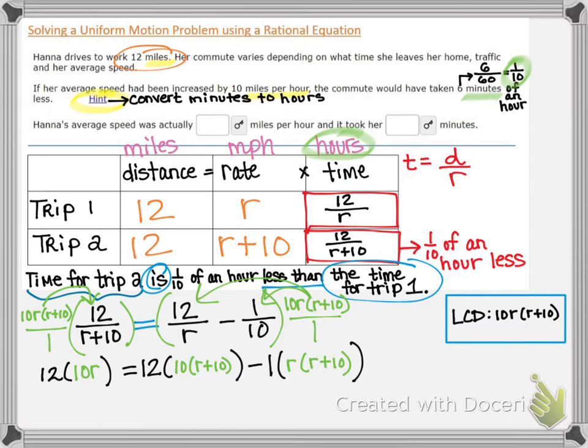Now we need to clean everything up. Here comes the fun part. We get to distribute a little bit more. So on the left, we're going to get 120 R equals. Now on the right side, when we first distribute that 12, then there's a 10, then there's the binomial R plus 10. You can think of it as distributing 120.